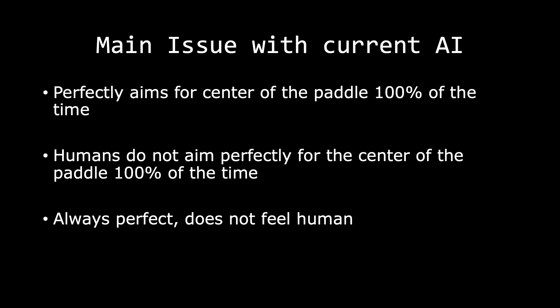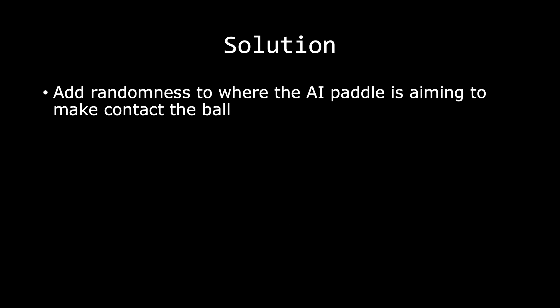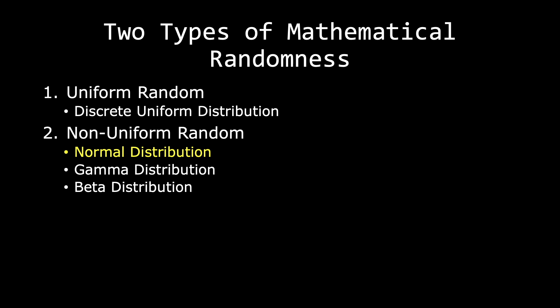An A.I. should feel human. The solution to this is to add randomness to where the A.I. paddle is aiming for. We have two types of mathematical randomness. The first is uniform randomness.